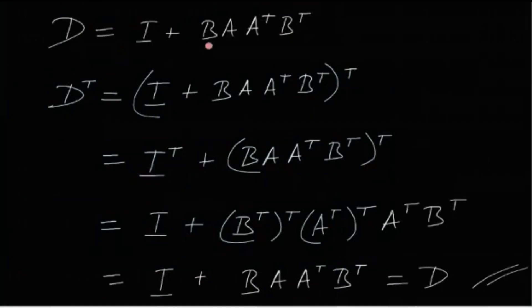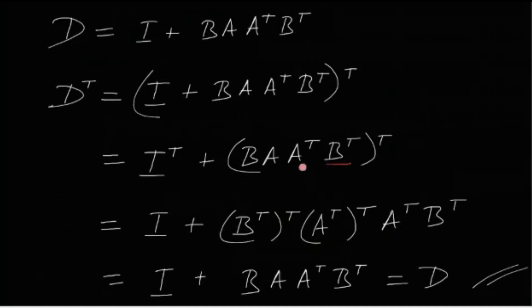For D = I + B·AA^T·B^T, taking the transpose and reversing the product order: D^T = I + (B^T)^T·(A^T)^T·A^T·B^T = I + B·A·A^T·B^T = D. So D^T = D, meaning D is also symmetric and option D is true. Therefore, options A and B are false and options C and D are true. This was a straightforward problem using elementary matrix properties. Do like, share, and subscribe for more exciting problems — see you next time!